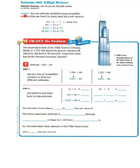Let's kind of connect back to a previous lesson. You can estimate quotients using compatible numbers that are found by using basic facts and patterns. Like 35 divided by 5 equals 7, 350 divided by 50, our basic fact is 35 and 5 equals 7 plus our 0, which would be 3,500 divided by 50 equals 70, 35,000 divided by 50 equals 700.